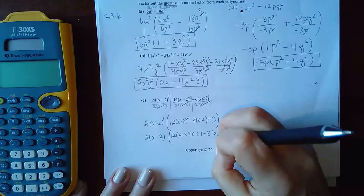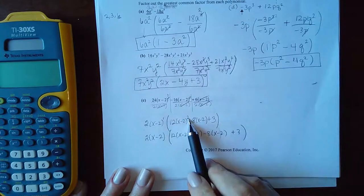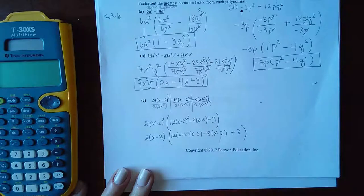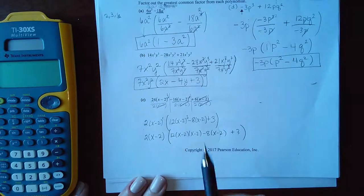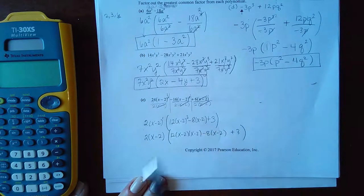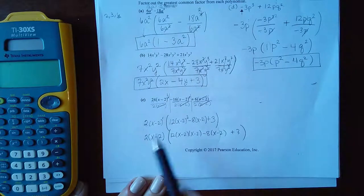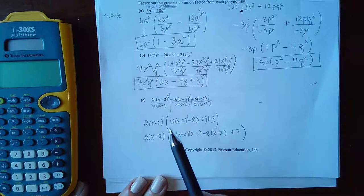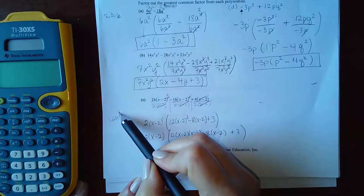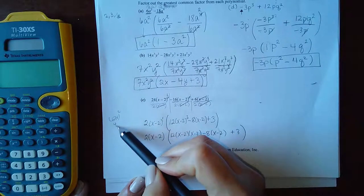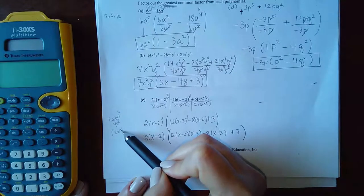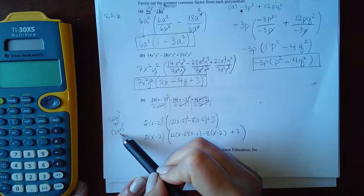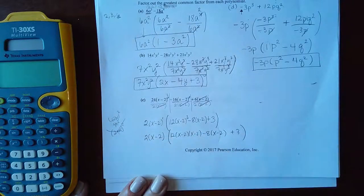Now remember what a square means. It means this times itself, which is why I've written it twice. Do not ever square the X and square the two. You cannot do that if there's a plus or a minus in between them. If it were 2X squared, yes, I could square that and I could square that. But as soon as you put a plus sign or a minus sign in between, you cannot do that.